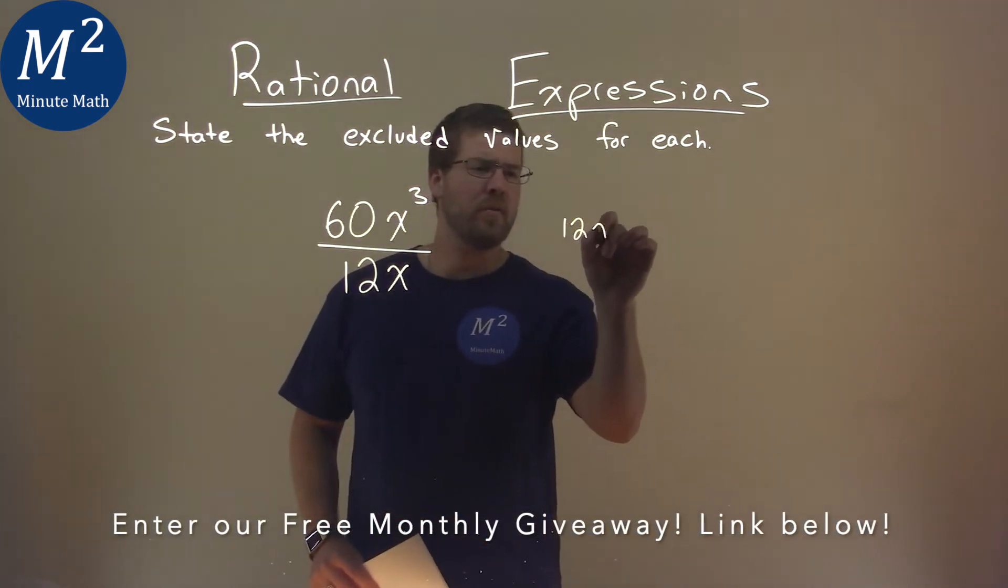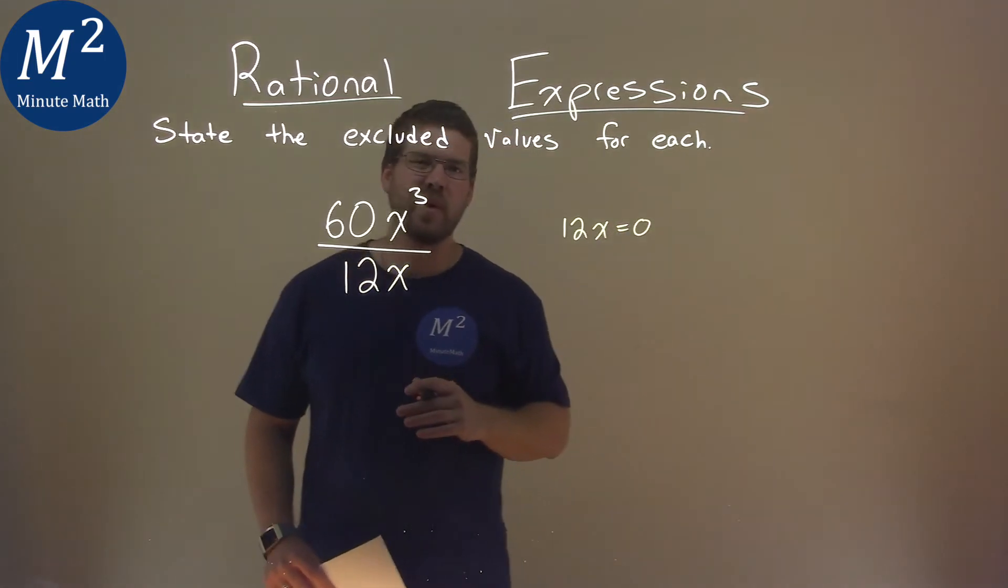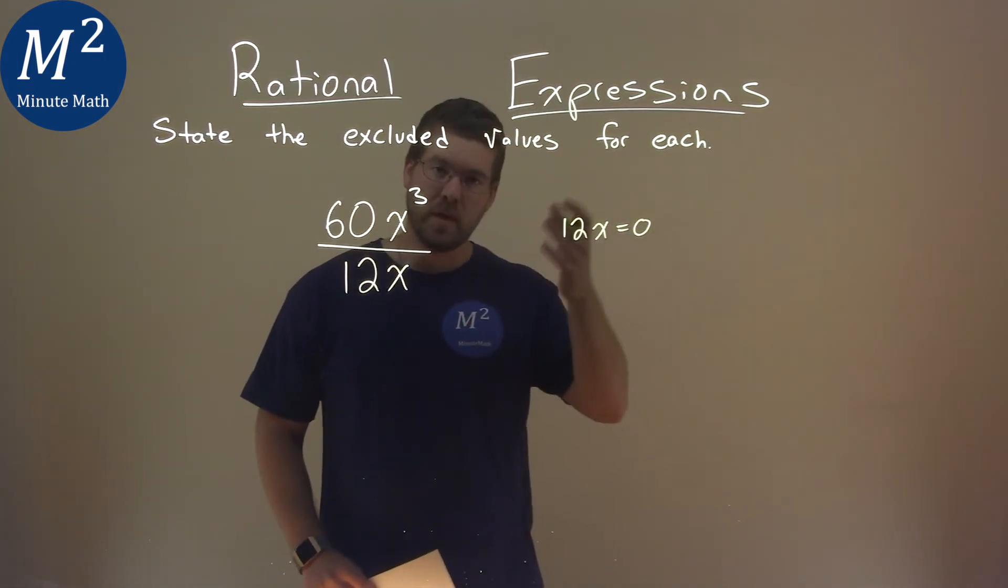So we take our denominator, 12x, and we set it equal to 0, and we need to find what value for x equals 0.